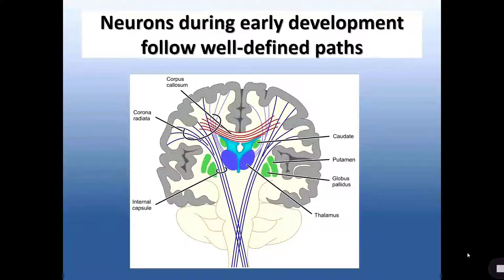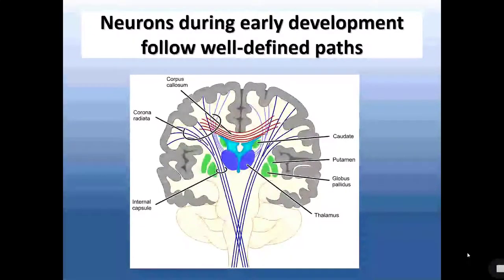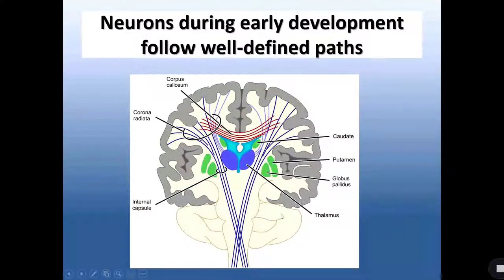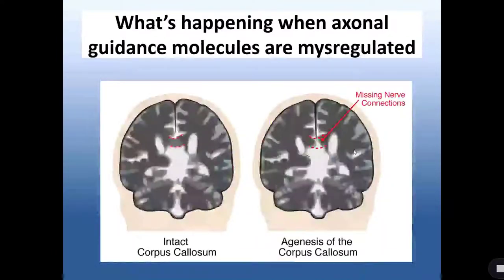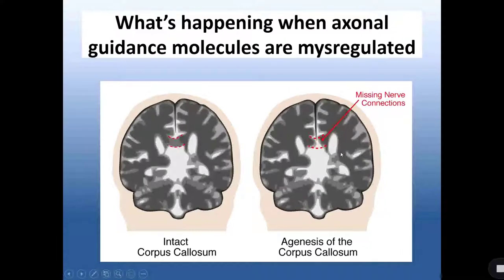Thanks to the action of these axon guidance molecules, neurons are able to establish a wiring system that relies on the formation of long protruding nerve fibers that follow a well-defined path in the central nervous system. When these axon guidance molecules are defective, mis-sorted, or messed up, several brain defects may occur, such as the missing formation of specialized fibers that connect the two hemispheres, the two halves of the brain.